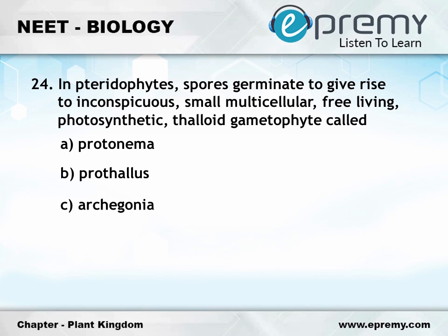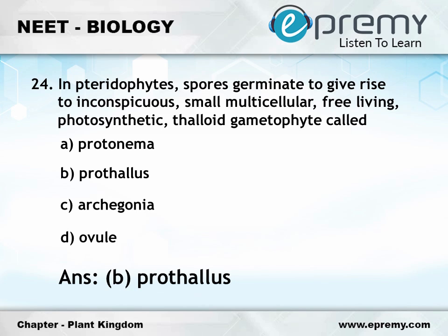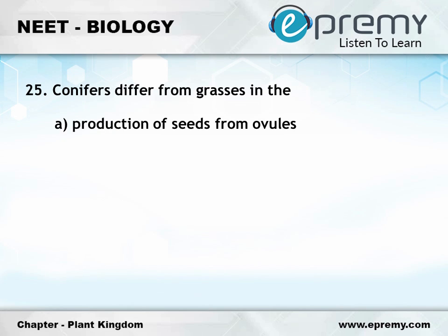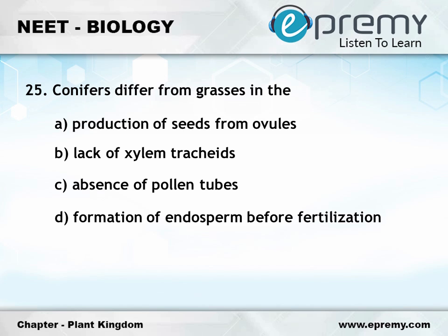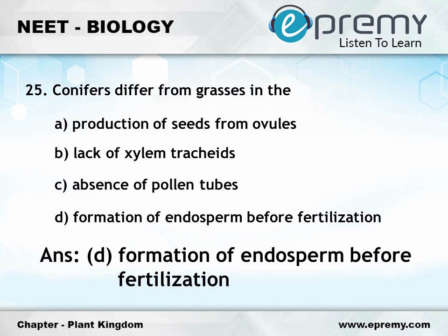The answer to question twenty-four is option B prothallus. Question number twenty-five: conifers differ from grasses in option A production of seeds from ovules, option B lack of xylem tracheids, option C absence of pollen tubes, option D formation of endosperm before fertilization. The answer is option D formation of endosperm before fertilization.